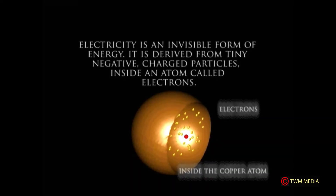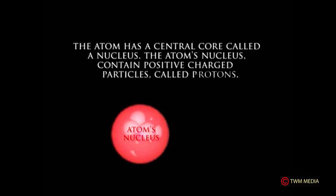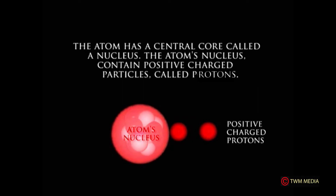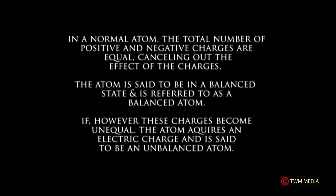Electricity is an invisible form of energy. It is derived from tiny negative-charge particles inside an atom called electrons. The atom has a central core called a nucleus. The atom's nucleus contains positively charged particles called protons. Orbiting this nucleus are the negatively charged particles called electrons. In a normal atom, the total number of positive and negative charges are equal, cancelling out the effect of the charges.